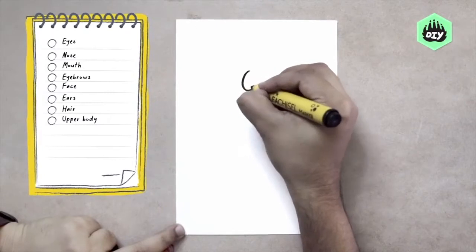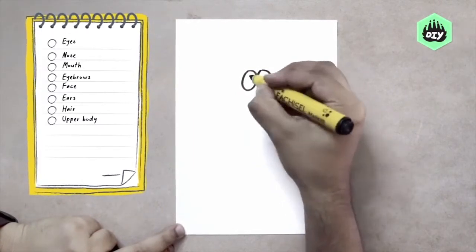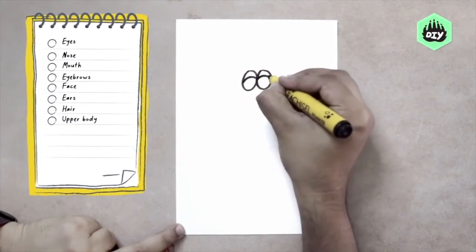We'll again start with the eyes, two circles, eyelids, eyeballs.